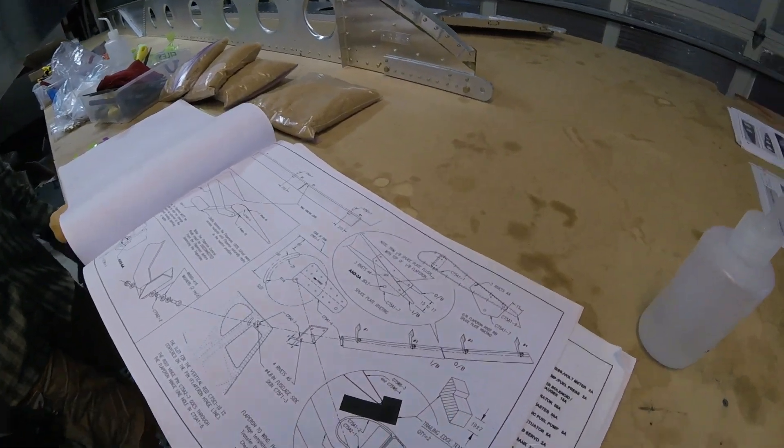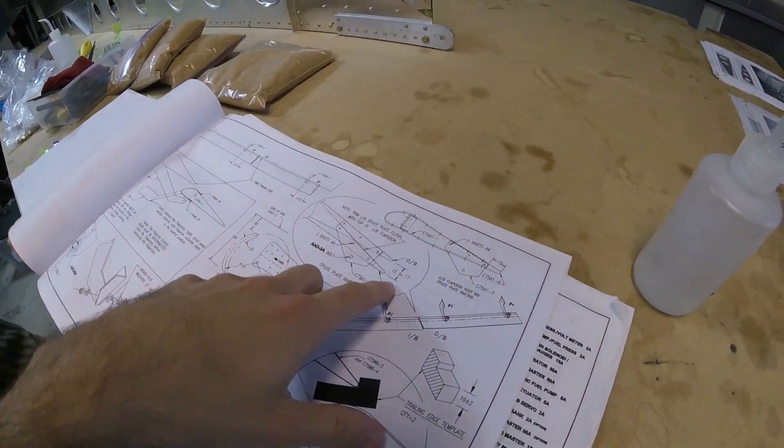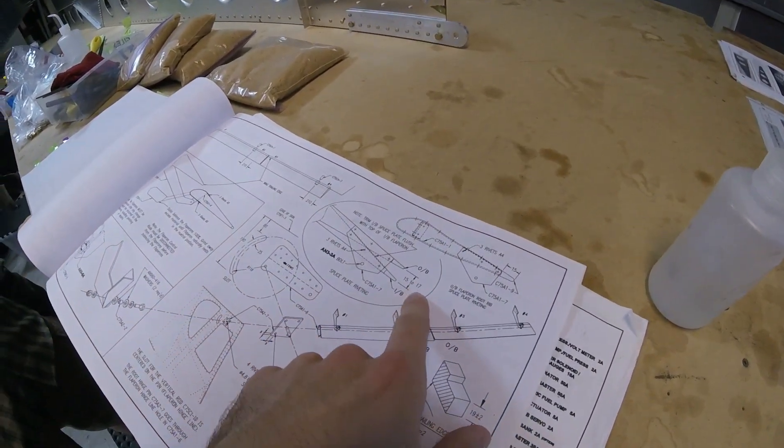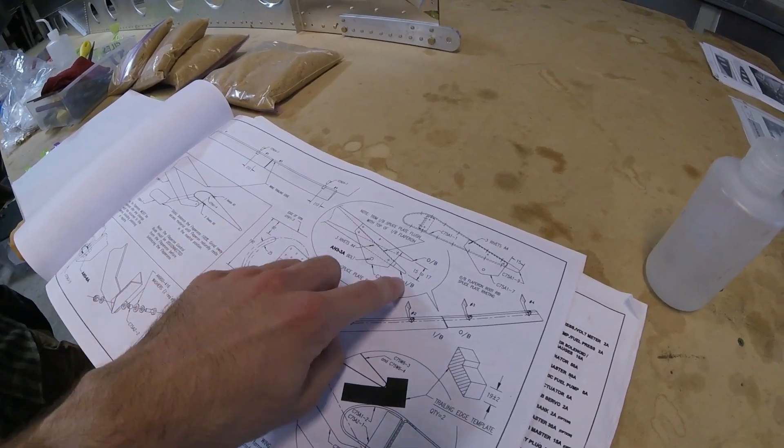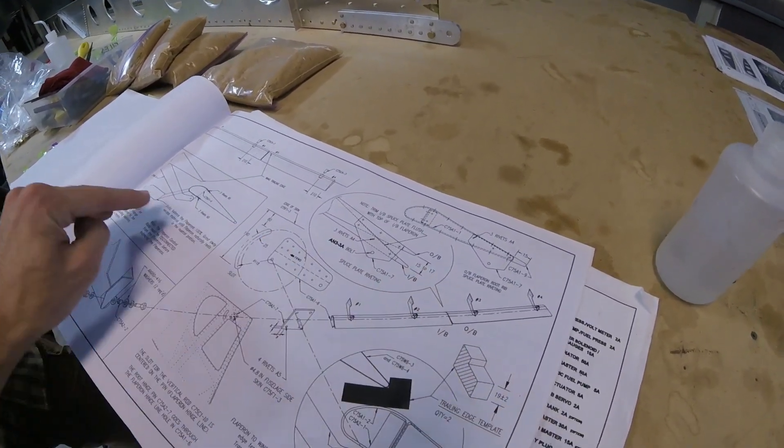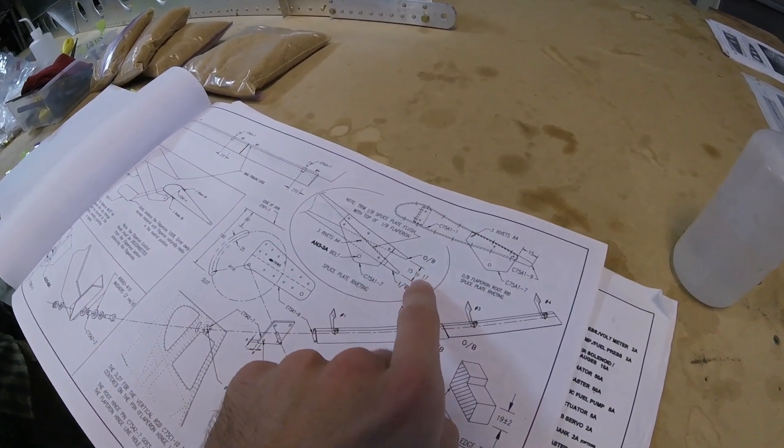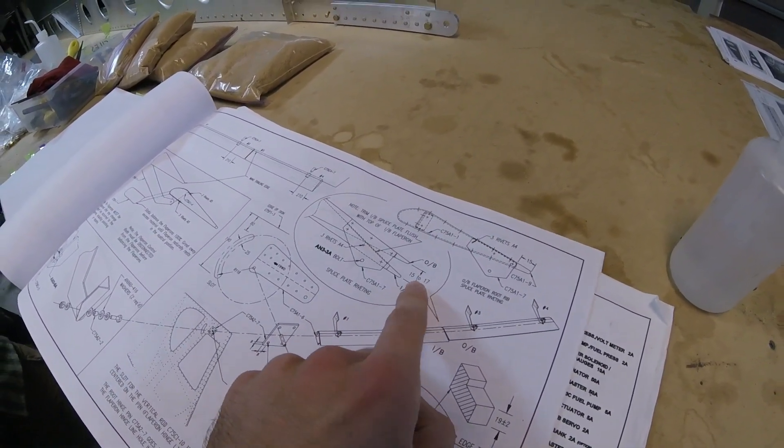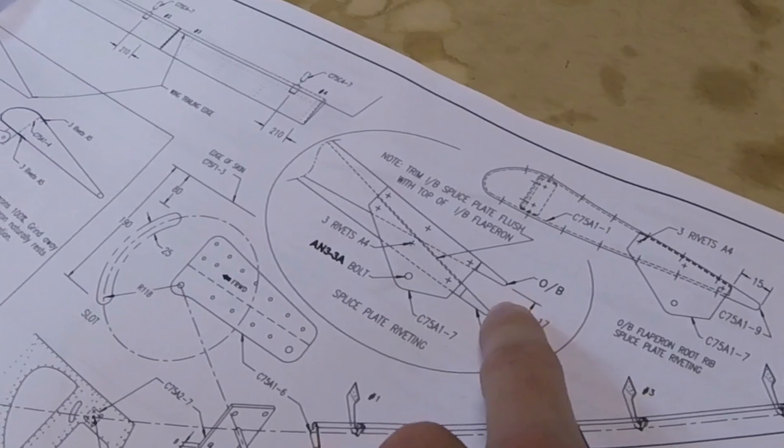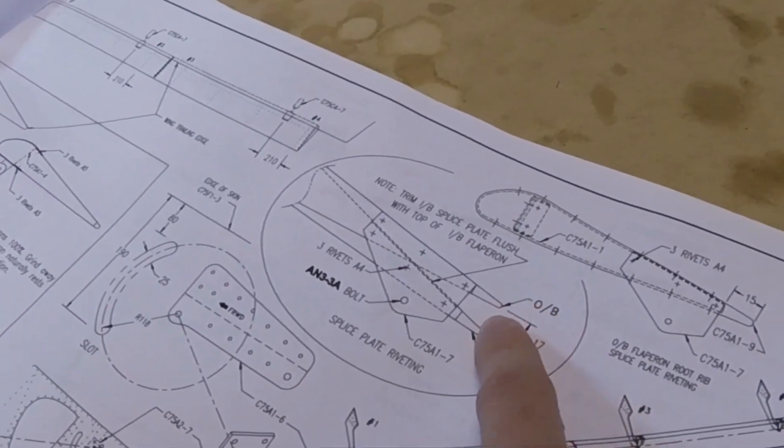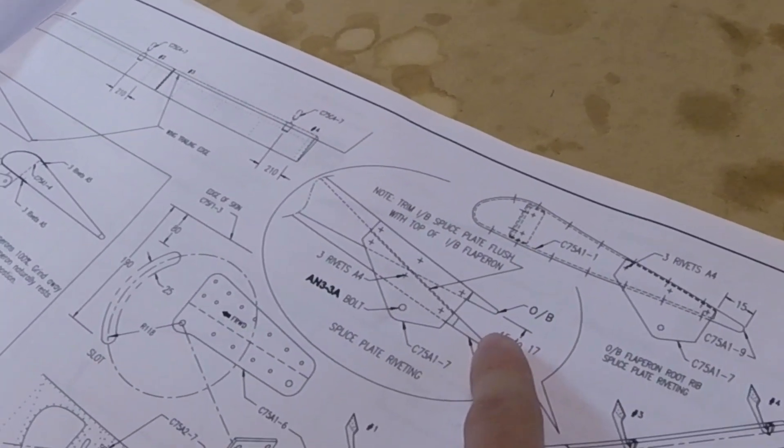I didn't realize at first that the inboard and outboard flaperon are not supposed to be lined up perfectly. There's actually supposed to be, I guess, 15 to 17 millimeters difference between them, and so that's why the plate has to be like that.